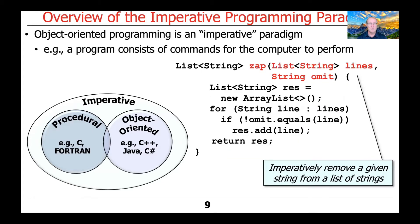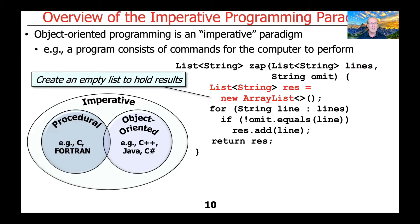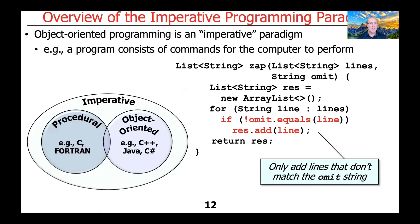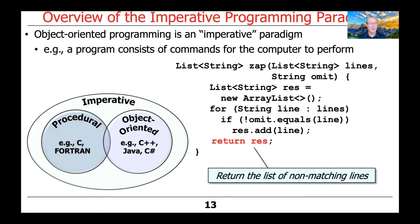Here's a simple example illustrating the key themes behind imperative programming with object-oriented features in Java. We have a method called ZAP, designed to imperatively remove a given string from a list of strings passed as a parameter. We pass the list of strings as the first parameter, followed by the string to omit as the second. We first create a local variable called res, an empty list initialized as an ArrayList but accessed as a List, to hold the results. We then iterate sequentially through each line using a Java for-each loop. If a line matches the one we're omitting, we ignore it; otherwise, we add it to res. After the loop, we return the list as the result of the ZAP method.